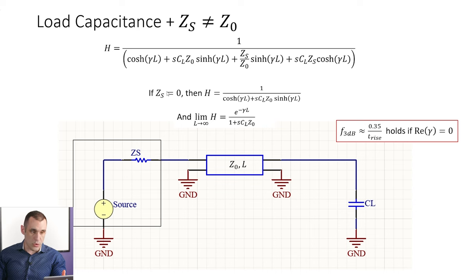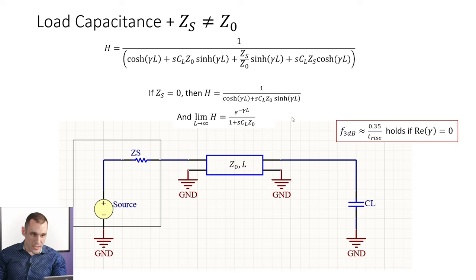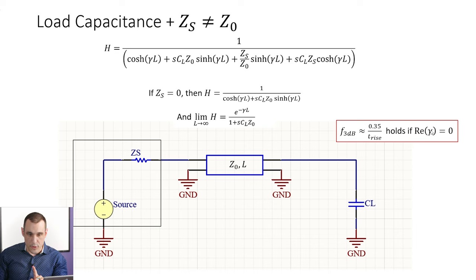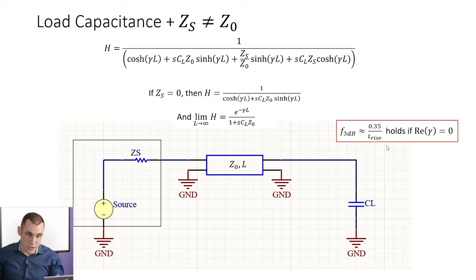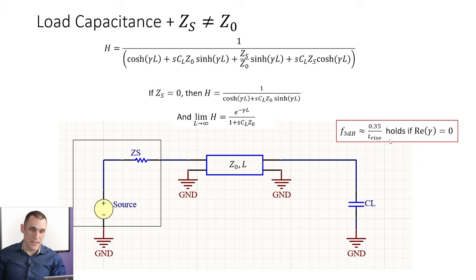If we assume a low source impedance — ZS equal to zero — this is our transfer function. It uses Cosh and Sinh functions to describe the propagation, and we have our load capacitance and line impedance. If we assume the line is really long (taking L going to infinity), we get this transfer function that accounts for losses. If we then assume the real part of the propagation constant is zero — meaning no losses — we get back to F_3dB equals 0.35 divided by the rise time, the classic knee frequency result relating signal bandwidth and rise time.